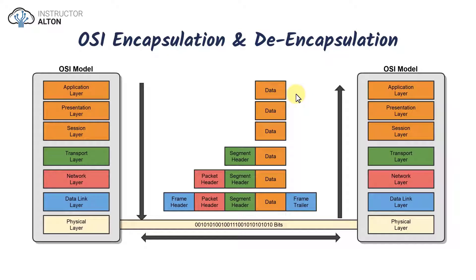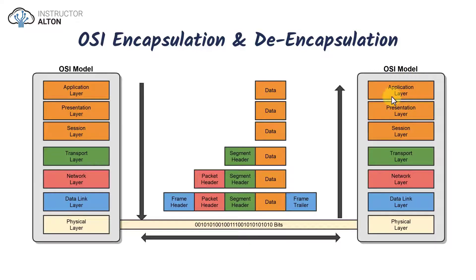That's a simplified view of data encapsulation. Encapsulation is when we add on all this information, and decapsulation is when we reach the destination and strip off all this information that it no longer needs, to the point where we just have the data in a format that we can read, see, and use at the application layer.